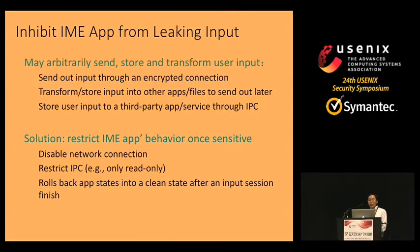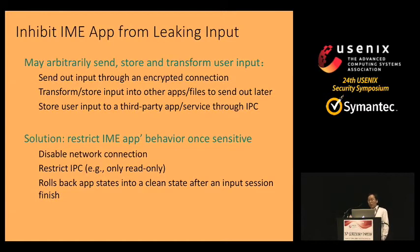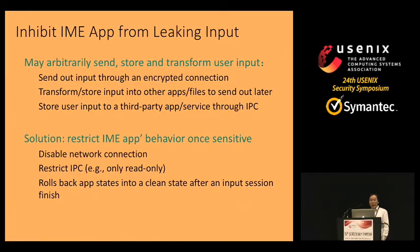Once IBOX determines that an input session is sensitive, it needs to isolate the IME app from leaking input. A malicious IME app may arbitrarily send, store, and transfer user input — directly through an encrypted connection, or transfer stored input into other apps to send later, or store input in a third-party app or service. IBOX addresses this by restricting the IME's behavior once sensitivity is determined: by disabling network connections, restricting IPC, and rolling back the IME app to a clean state.